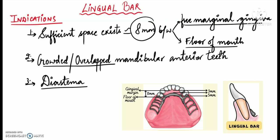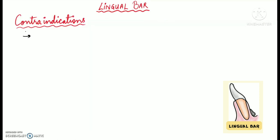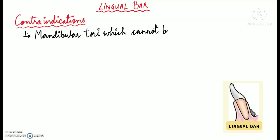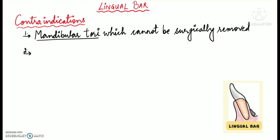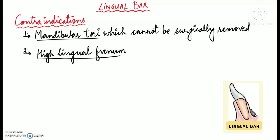Regarding contraindications: when mandibular tori are present and cannot be removed surgically, they will interfere with placement of the lingual bar, so it should be avoided in such cases. Another contraindication is when the lingual frenum is high or the vertical space available for a lingual bar is limited — less than 8 millimeters.